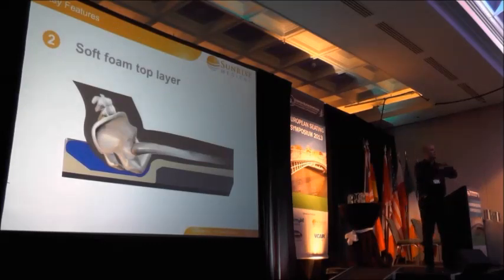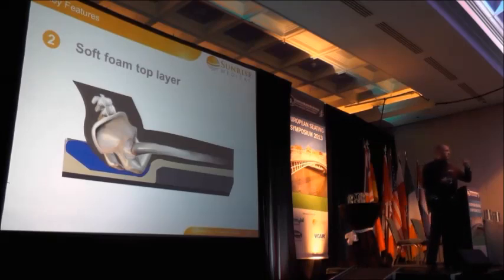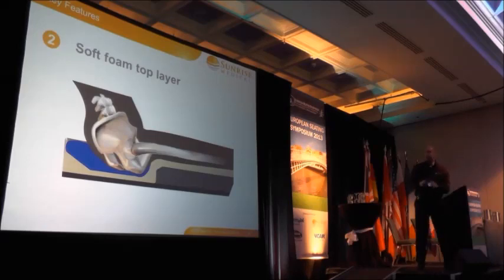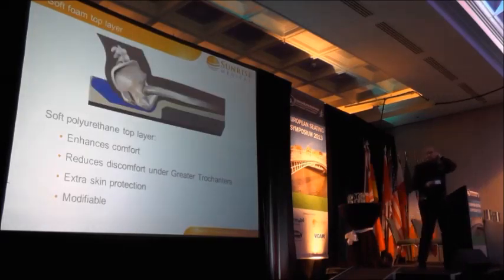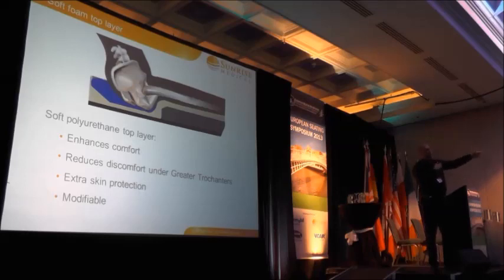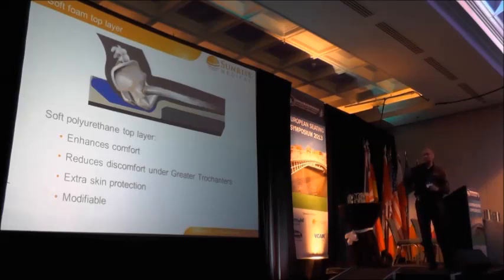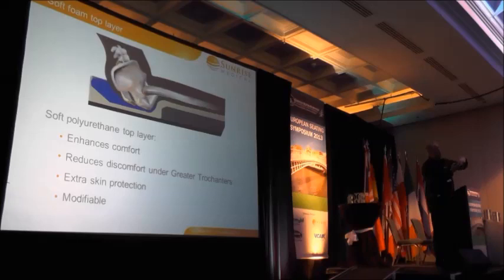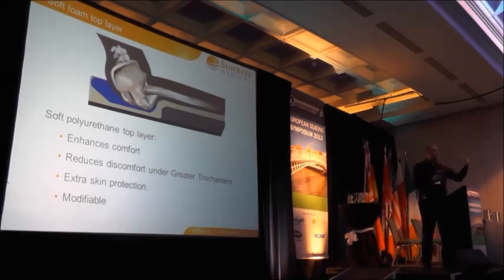We've got a soft foam top layer — that very white covering — which makes the cushion much more comfortable to sit on. It's an open-cell foam, meaning fluid can actually ingress through it, but we can still carve and work with it, as it forms over the top of the cushion. This enhances comfort and reduces pressure at the greater trochanters when loading through that area. It also provides extra skin protection by shielding the ischials from bony prominences driving through onto a hard structural foam. And crucially, it's still modifiable — an absolutely essential feature to ensure the cushion meets each user's individual needs.